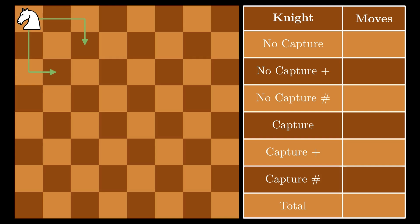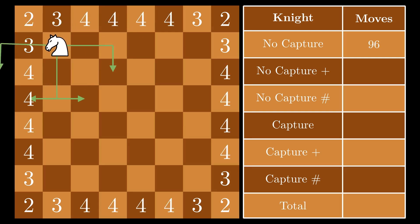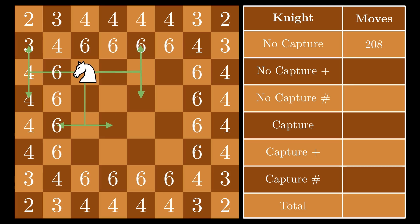The worst place for a knight is the corner, where it only has 2 squares to move to. Shifting the knight progressively closer to the center of the board, the number of options increases to 3, then 4, up to 6, and finally 8 in the middle 16 squares. As you can see in the table, this totals 336 moves.